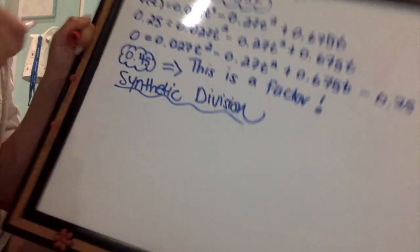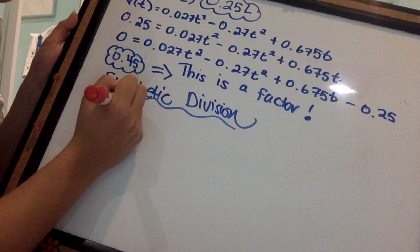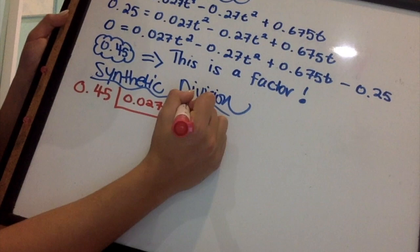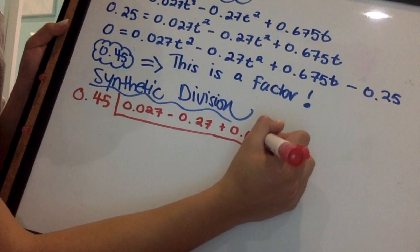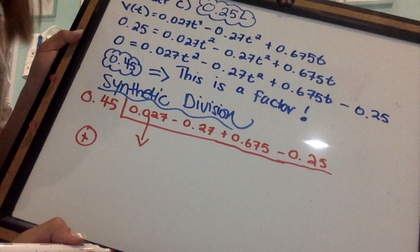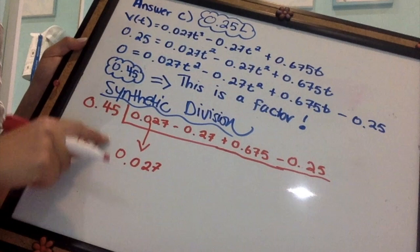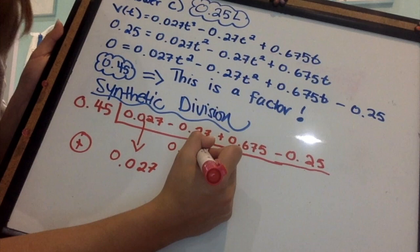Now, using the grade 12 concept of synthetic division, I am going to use 0.45 as my factor and plug it in to the following numbers. Now, I am going to be bringing down my 0.027 and showing the added sign to remember that I will be adding my numbers. The 0.027 will be multiplied by 0.45. Once that's done, I am going to get a new number and put it to the top of the second row.